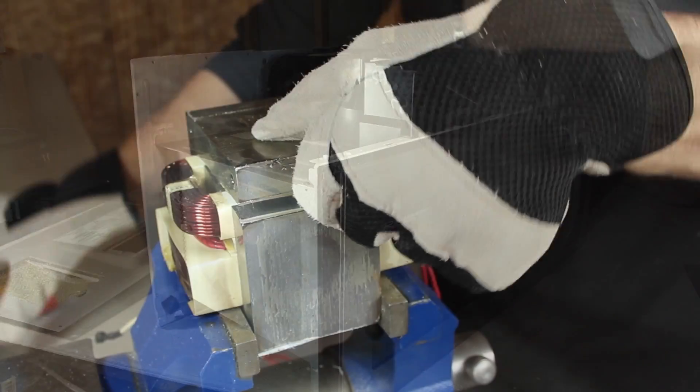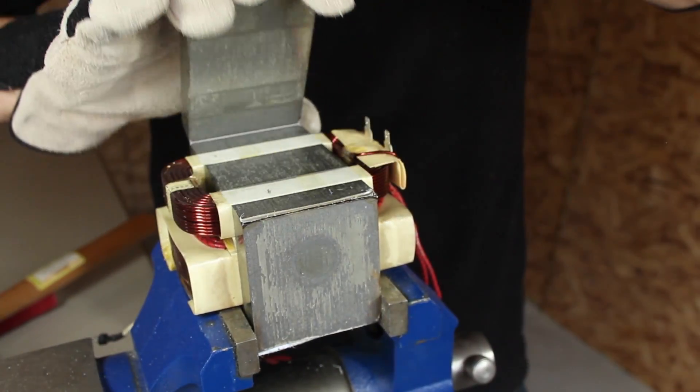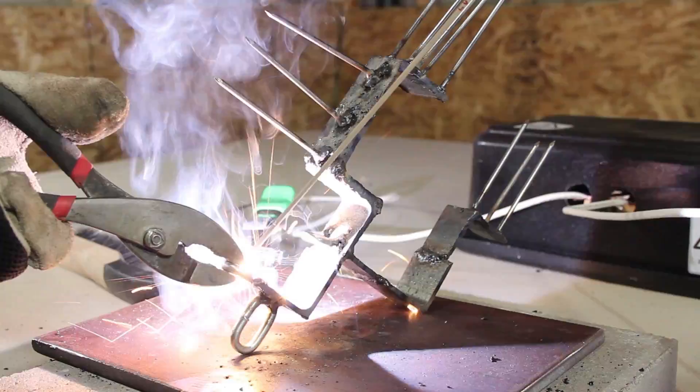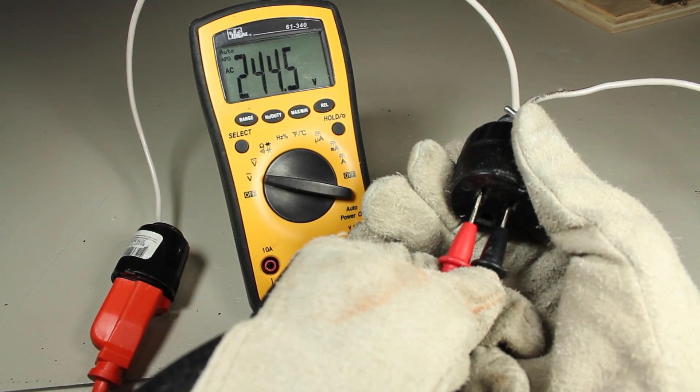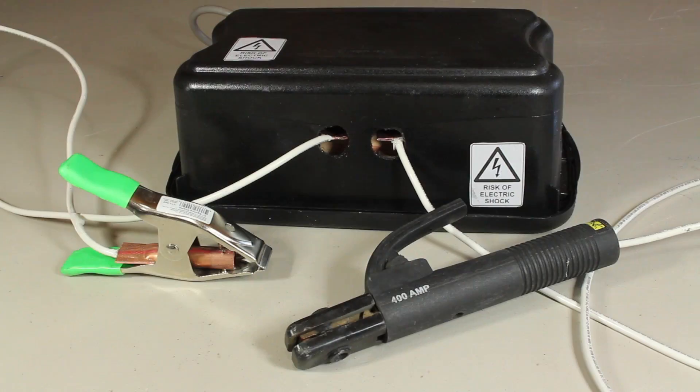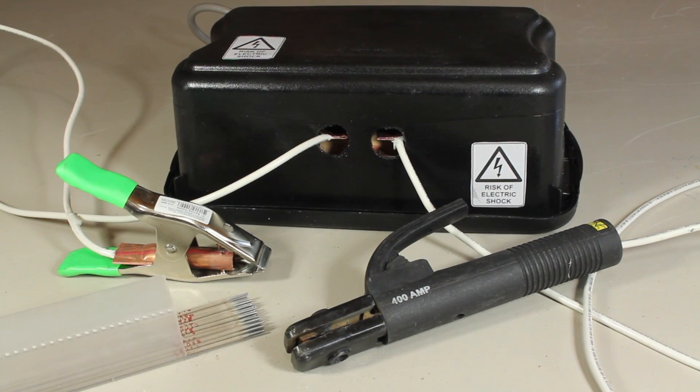In part one of this project we scavenged some parts from household appliances and modified them so we could weld metal. In this project we'll be rigging up the electrical system and adding some finishing touches so that our homemade stick welder is ready for operation.